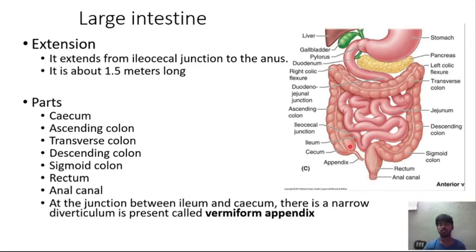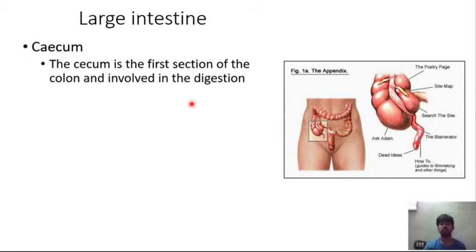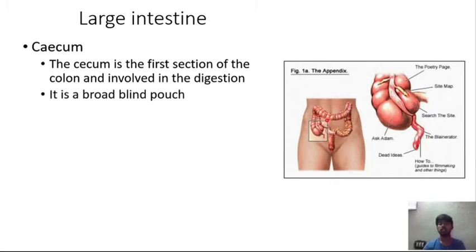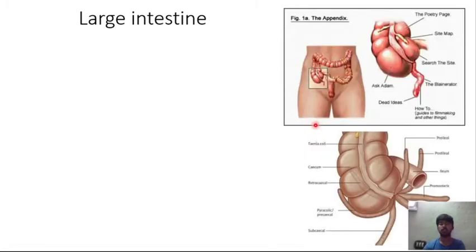At the junction of the ileum and cecum, a narrow diverticulum called the vermiform appendix is present. The cecum is the first section of the colon, involved in digestion; it is a broad blind pouch about 5 to 7 centimeters in length, situated in the ileocecal fossa, and continues as the ascending colon.